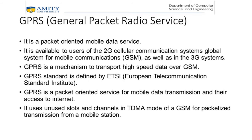GPRS is a packet-oriented mobile data service available to users of the 2G cellular communication system — Global System for Mobile Communications, that is GSM. It is also available in 3G systems. In 2G systems, GPRS provides data rates of 56 to 114 kilobits per second, so the speed has to increase. GPRS is a mechanism to transport high-speed data over GSM.